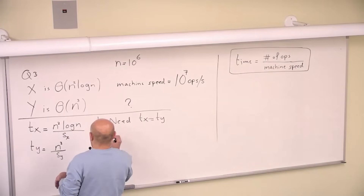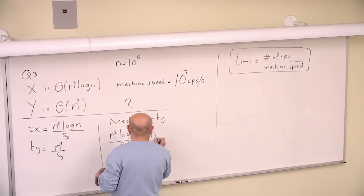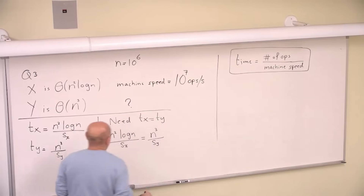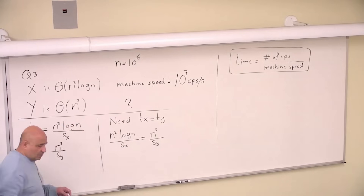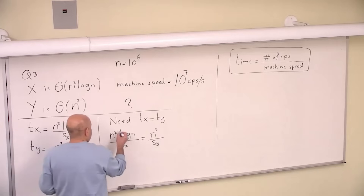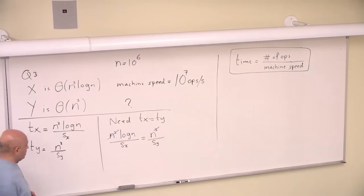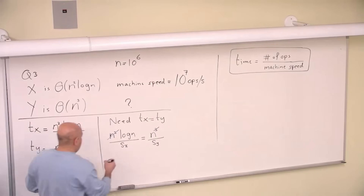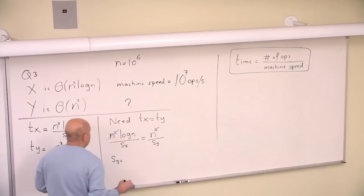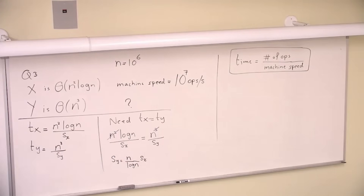So N² log N divided by S_X equals N³ divided by S_Y. We need S_Y. We can do a simplification — we have N² here and N³ here, so dividing both sides by N² the N² goes away and we have N. Now solving for S_Y: S_Y equals N over log N multiplied by S_X.